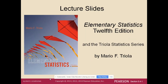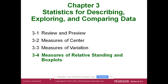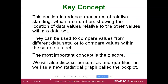Here we are at the last section in Chapter 3. We had measures of center — mean, median, mode — and measures of variation — standard deviation, range, those sort of things. Section 3.4 is going to be measures of relative standing and box plots. Relative standing is really important and box plots are easy, so it won't be a big deal.